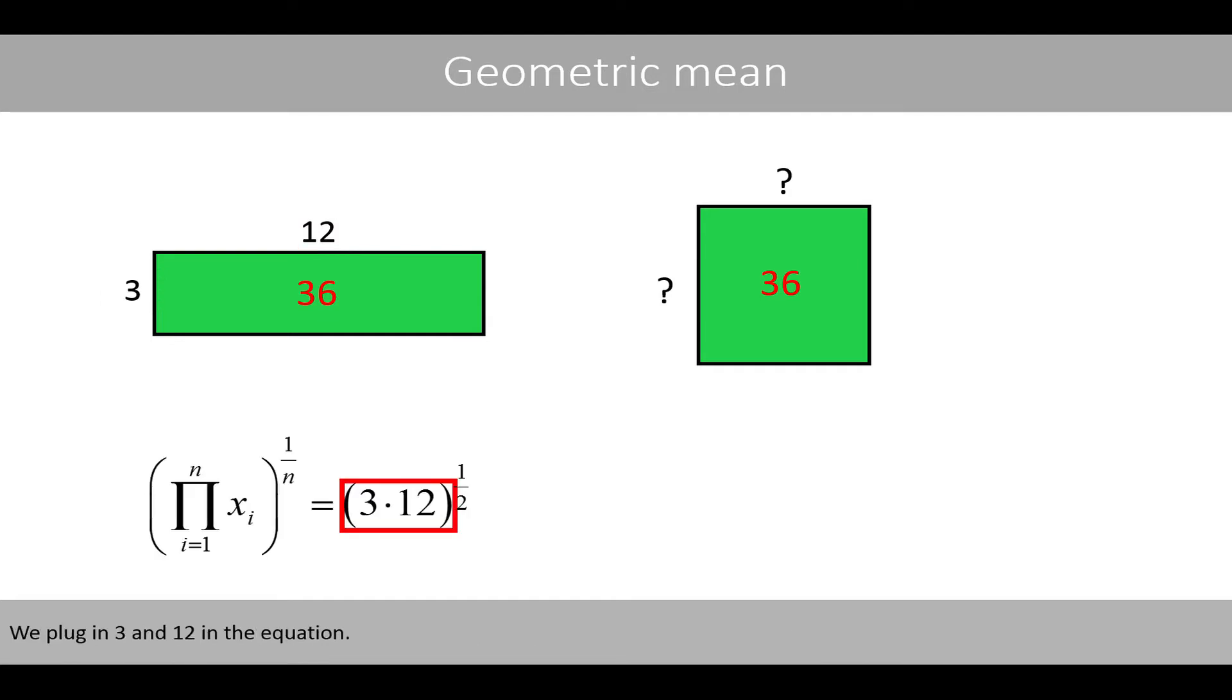We plug in 3 and 12 in the equation. Since we have only two numbers, n is equal to 2. The product raised to the power of 1 half is equivalent to the square root of the product. The geometric mean of 3 and 12 is therefore 6. The size of the square is therefore equal to 6.